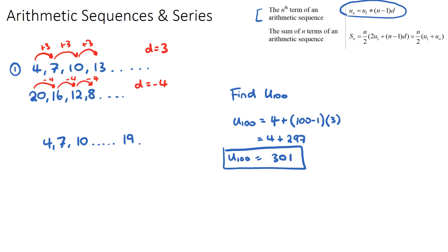Be careful in some IB exam questions — they may give you a term value, such as un equals 301, and ask what term number it is. You would set 301 equal to the formula, knowing u1 and d, and use algebra to work backwards to find n. This is a common IB question.